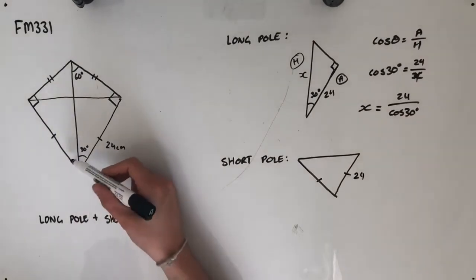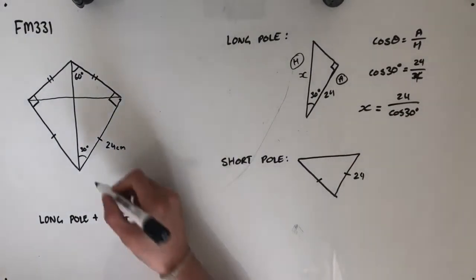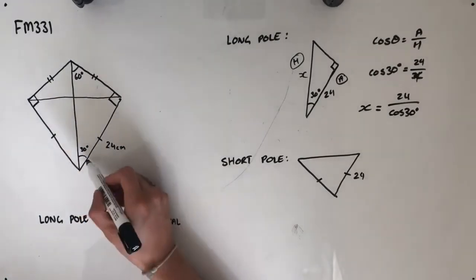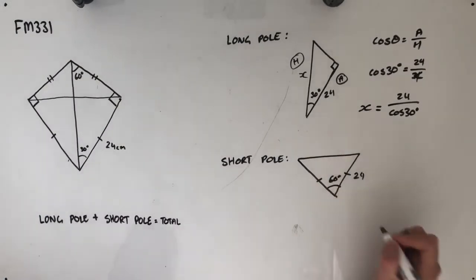When I have a look here, I can see that half of this triangle would end up being 30 degrees. Sorry, half of the angle made here is 30 degrees, which means the whole thing is going to be 60 degrees.